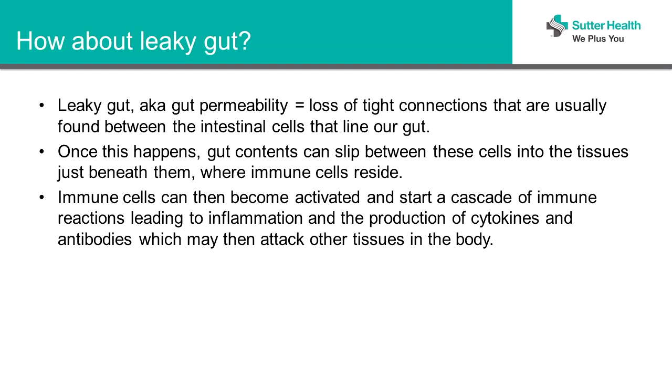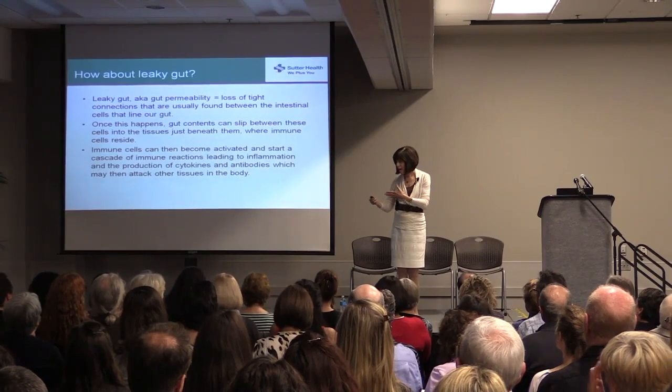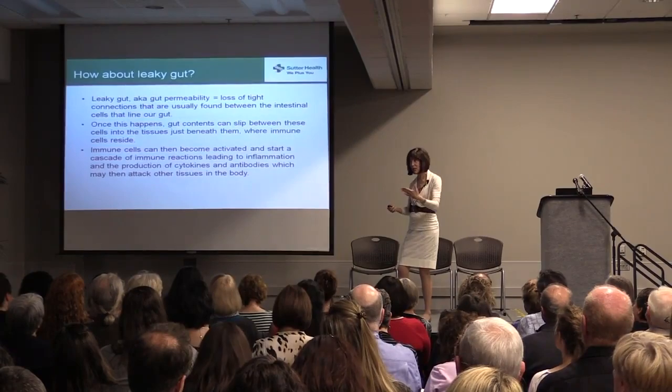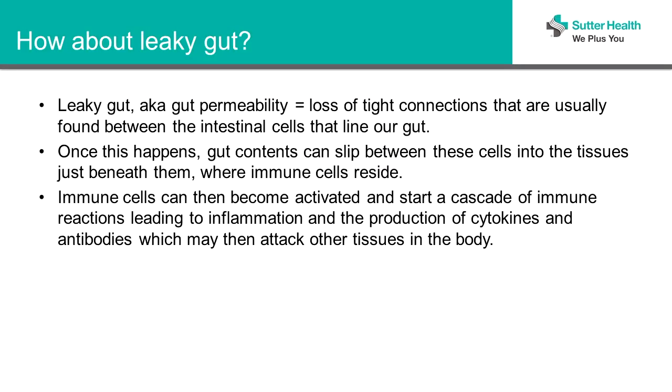How about leaky gut? We call that gut permeability or leaky gut, and it means the loss of tight connections in the cells of the gut because there's a barrier there. We don't just talk about leaky gut now — we talk about leaky brain, dementia, cognitive issues, leaky kidney, leaky gut. All of the organs in the body that have membranes that separate have a separation, and we're finding there may actually be leaky changes in a number of those membranes, not just the gut.